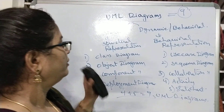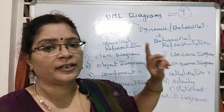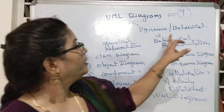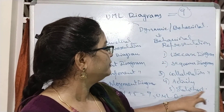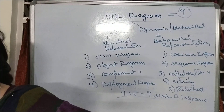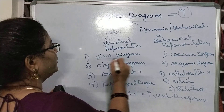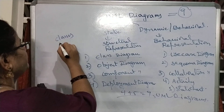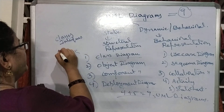Now we will discuss one after another how these diagrams are represented. Static and dynamic once again: static diagrams are class diagram, object diagram, component diagram, deployment diagram. Dynamic diagrams are use case, sequence, collaboration, activity, state chart. These are the various 9 kinds of UML diagrams. The very first one is the class diagram. This class diagram contains a set of classes, interfaces, and their relationships.